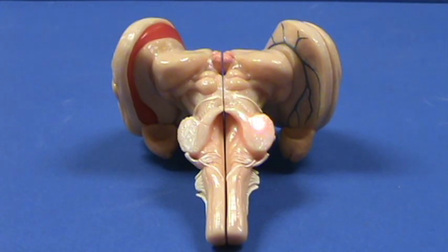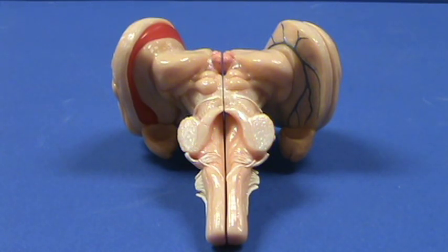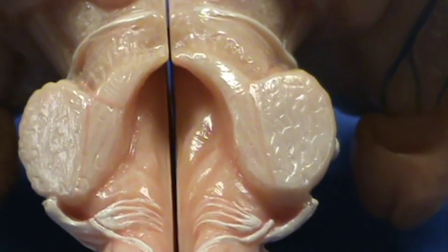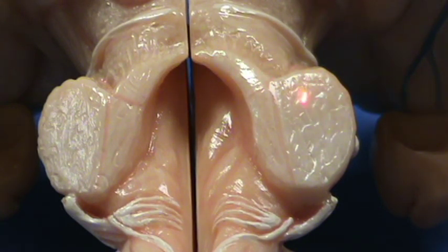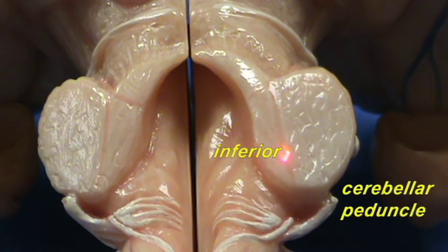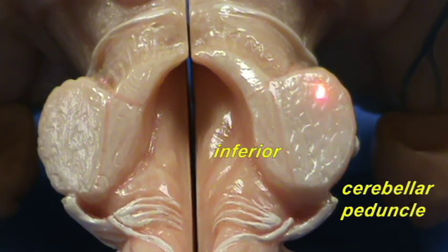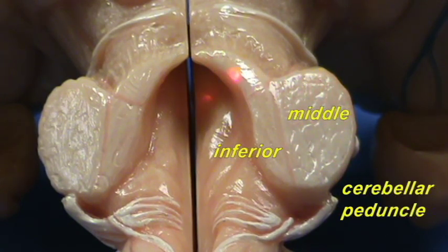This is where you would find the cerebellum attached. Here you have the cut fibers that would be attaching the cerebellum to the metencephalon. Taking a closer look, you can divide this attachment into three peduncles — tracks of fibers. Right over here is the inferior peduncle of the cerebellum, here is the much larger middle peduncle, and right over here is the superior peduncle.